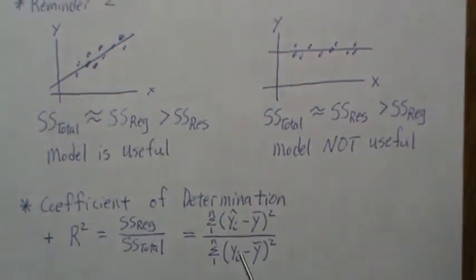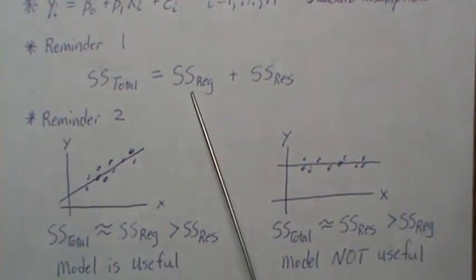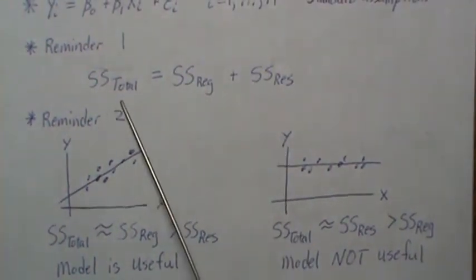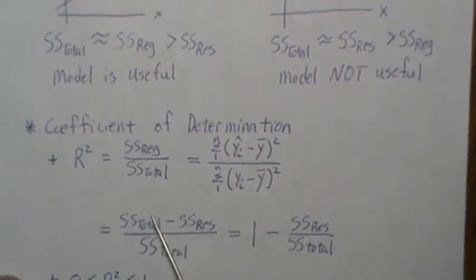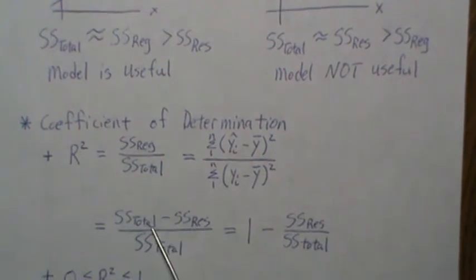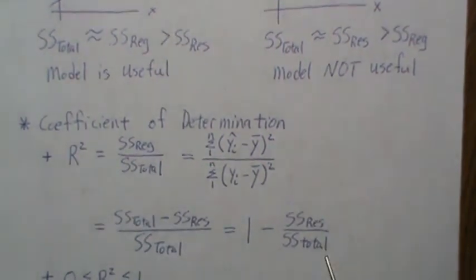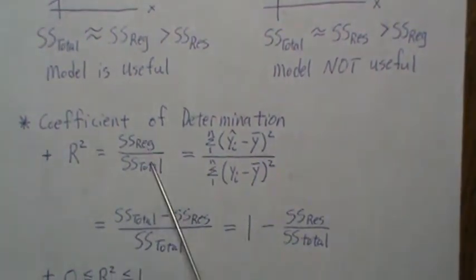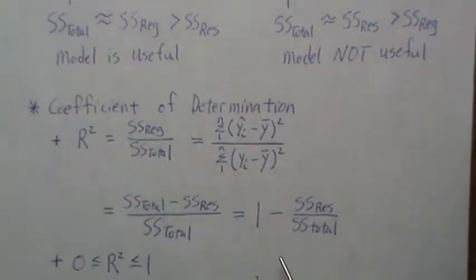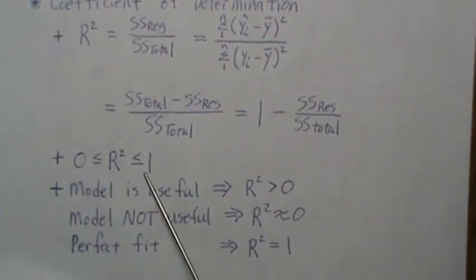Some alternative formulations: since the regression sum of squares equals the total minus the residual, we can substitute to get R² = 1 − (SSE / SST). This formula is often used in place of the original definition, but they are equivalent.